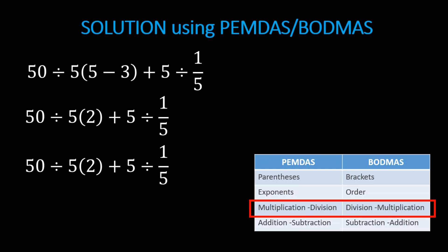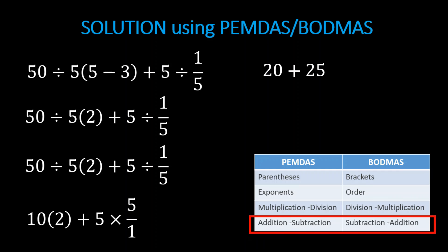So we can write 50 divided by 5 equals 10, copy 10, then copy parenthesis 2, then plus 5 times the reciprocal of 1 fifth which is 5 over 1. We still have to finish the multiplication precedence, so 10 times 2 equals 20, 5 times 5 over 1 is 25. Add everything up and we get 45.